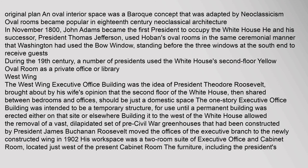He and his successor President Thomas Jefferson used Hoban's oval rooms in the same ceremonial manner that Washington had used the bow window, standing before the three windows at the south end to receive guests. During the 19th century, a number of presidents used the White House's second-floor yellow oval room as a private office or library. The West Wing Executive Office building was the idea of President Theodore Roosevelt, brought about by his wife's opinion that the second floor of the White House, then shared between bedrooms and offices, should be just a domestic space.